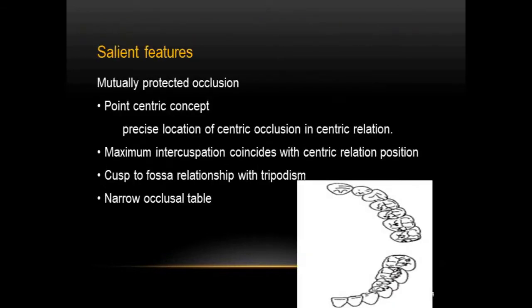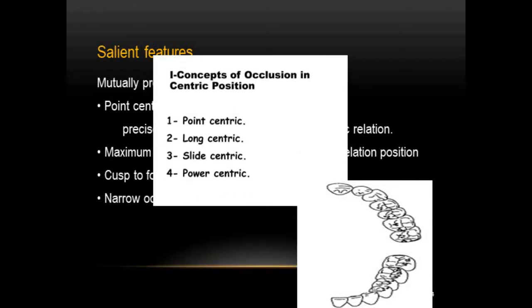The salient features of the nathological concept were: it was a mutually protected occlusion, which we have already discussed. The next feature was the point-centric concept — meaning there is a precise location of centric occlusion in centric relation. There are other concepts of occlusion in centric position other than point-centric, which include long-centric, slight-centric and power-centric.